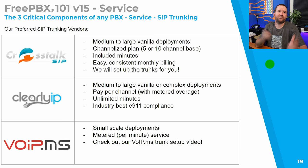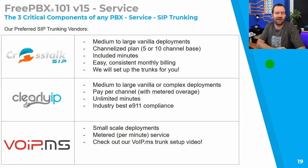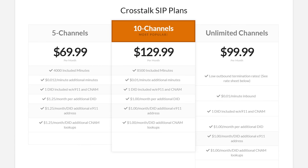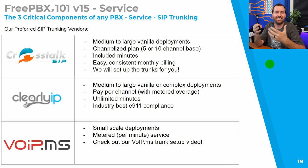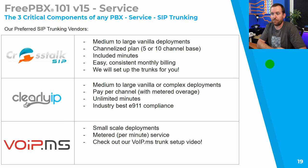Our preferred SIP trunking vendors: first, Crosstalk SIP. We're good for medium to large vanilla deployments. We sell SIP trunks in channel plans — a five-channel plan for five concurrent calls and a 10-channel plan for 10 concurrent calls are our two most popular packages. We also have unlimited channels. With our packages we include minutes — about 4,000 with the five-channel plan and 8,500 with the 10-channel plan — for easy, consistent monthly billing with no surprises. As an added bonus, we will dial into your server and set up the SIP trunk for you utilizing all best practices.